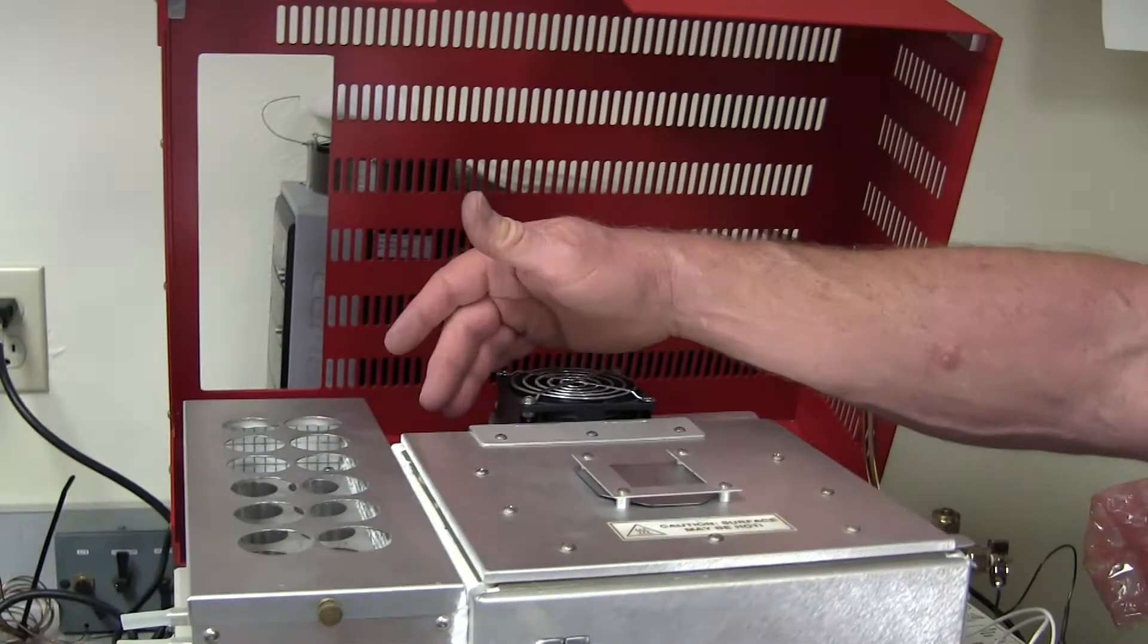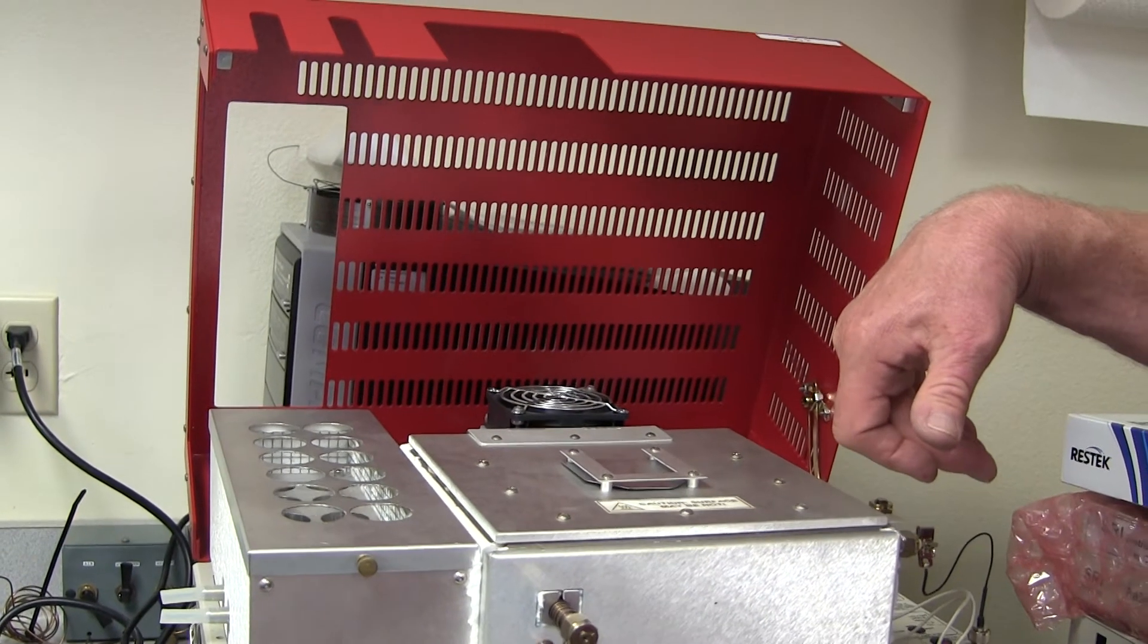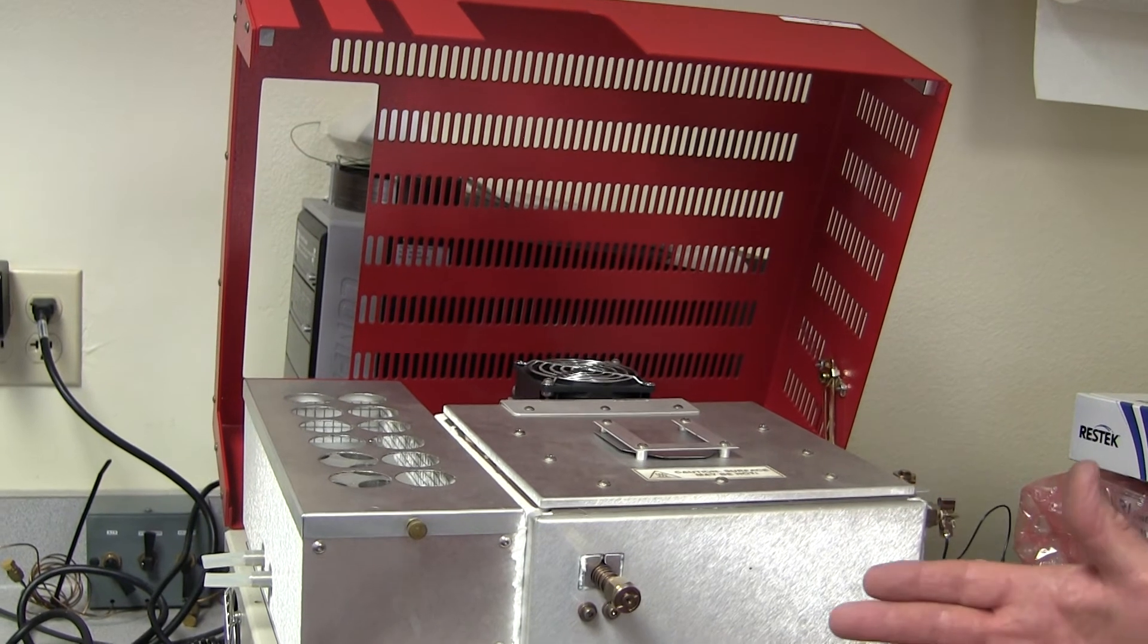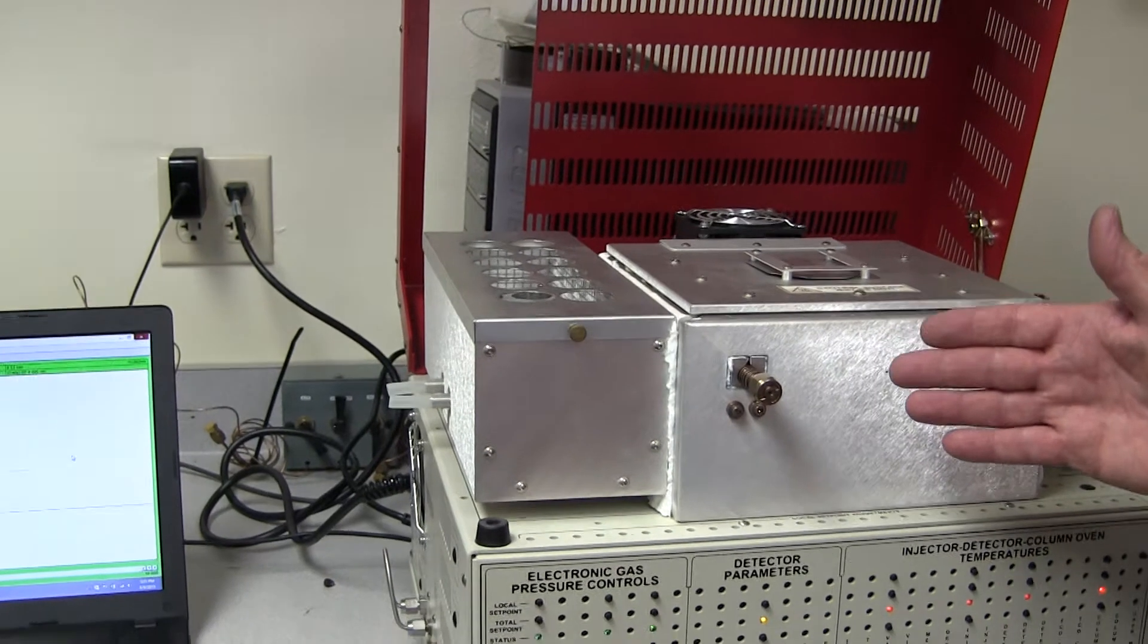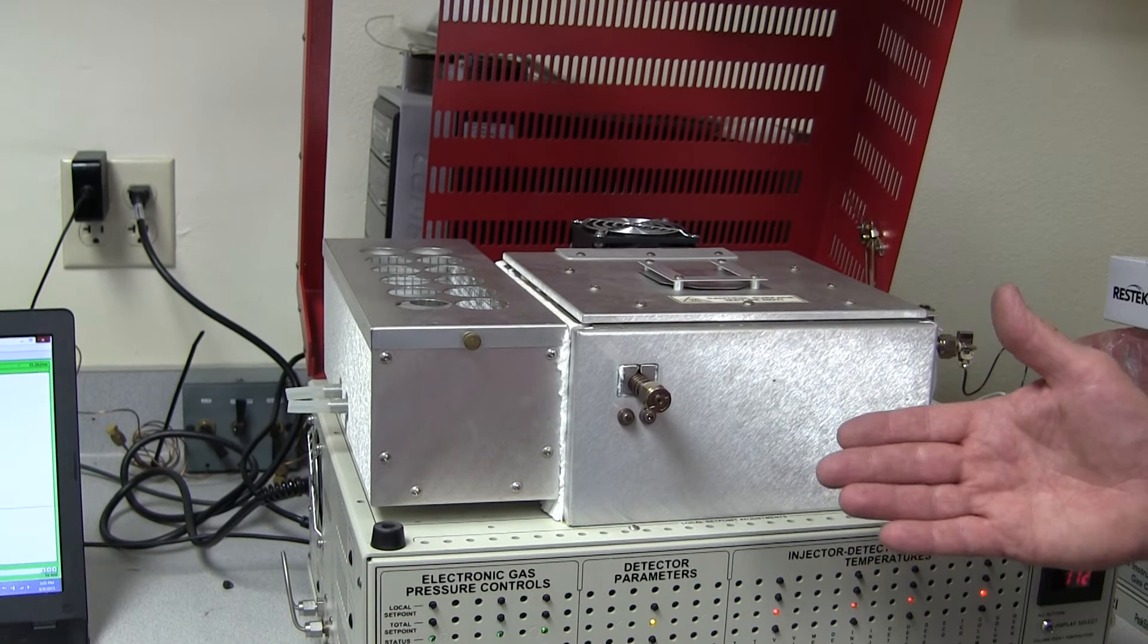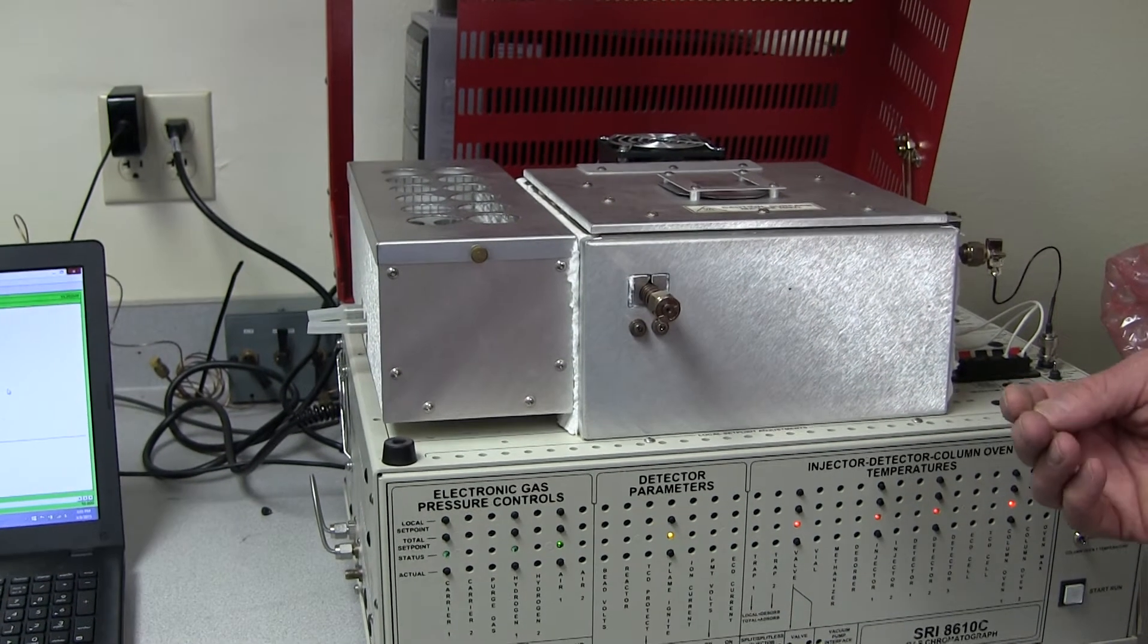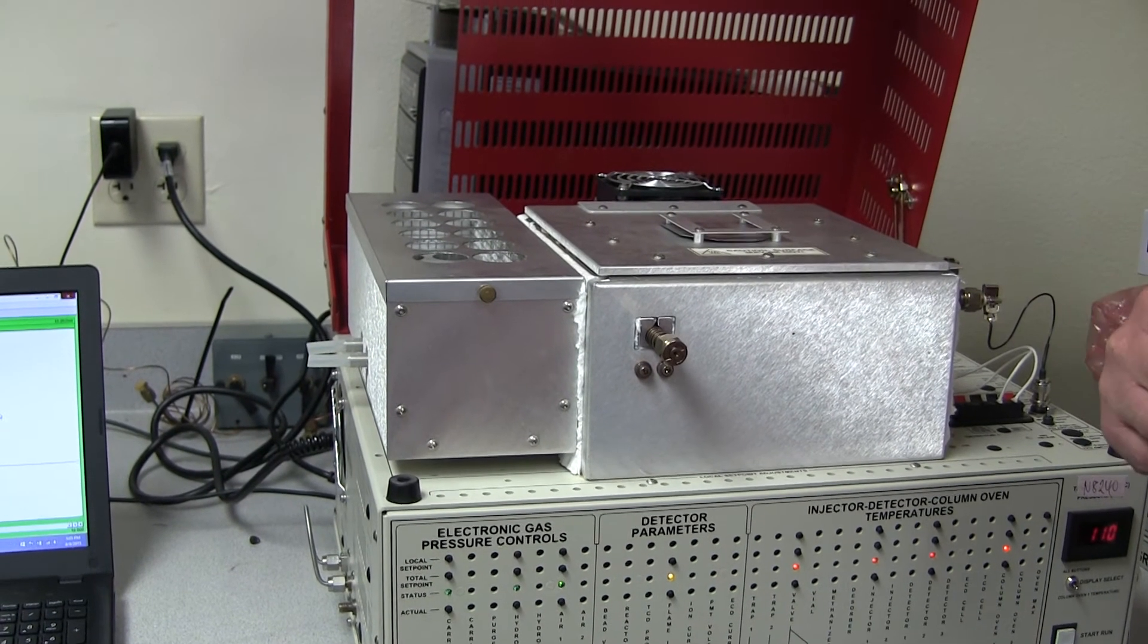The contaminants that are baked out of that little polishing filter go the same path as the carrier gas would normally go. So that means it would go through the column and end up at the detector. This is both a good thing and a bad thing. The good thing is that if you have the column and the detector that can see the contamination, you can assess how much contamination there really was in the filter. That's useful to know so that you can schedule a repeat bakeout in a week or two, depending on how big the peak is. Let's go look and see what that kind of a peak looks like.